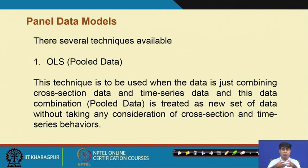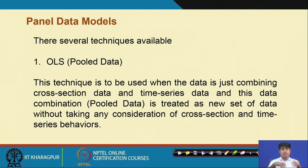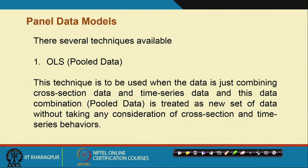We have no issue using the specification of pool data or panel data, but the problem and the output will give some kind of indication where to go — whether to stick with pool data or stick with panel data with fixed effect models, random effect models, and GMM. The pool data technique is used when data is just combining cross-sectional data with time series data. This combination is called pool data and is stated as a new set of data without taking any consideration of cross-sectional variation and time series variations.